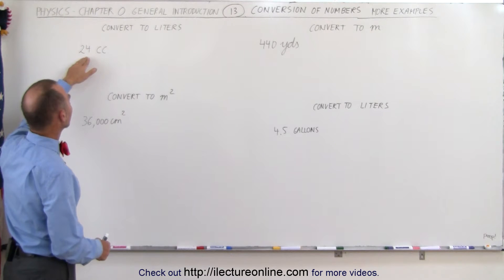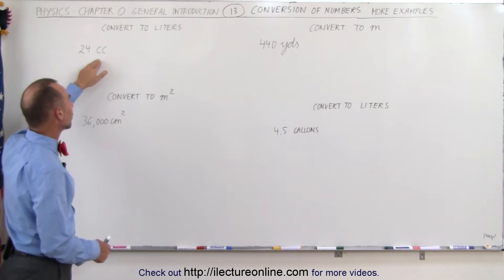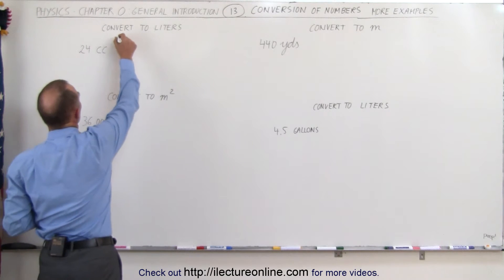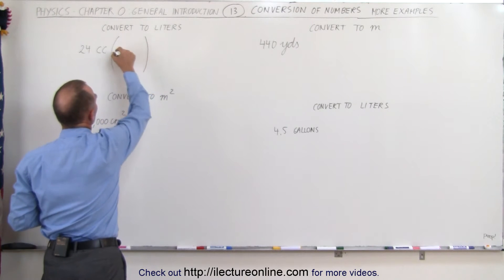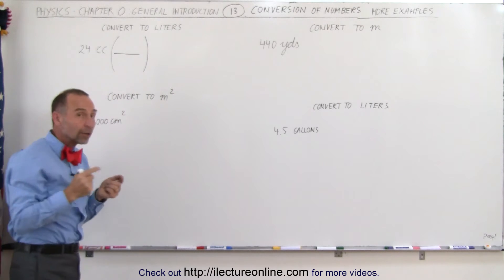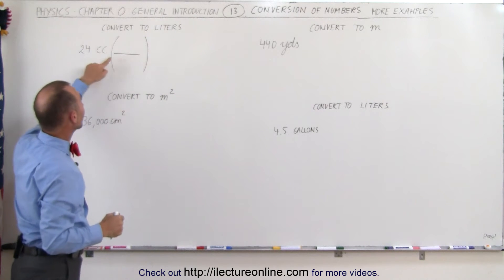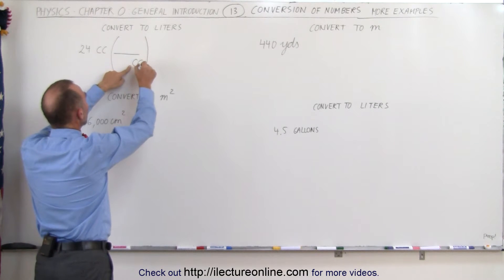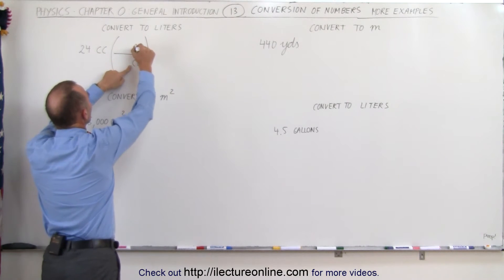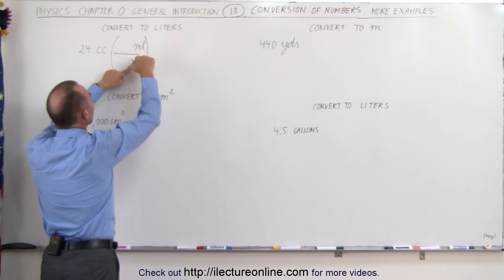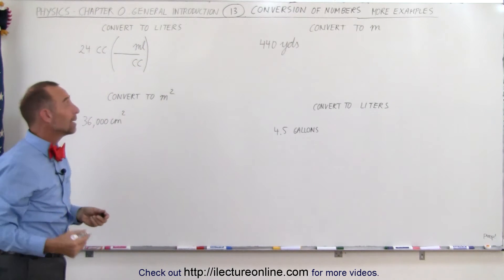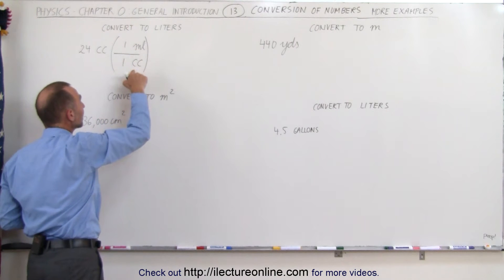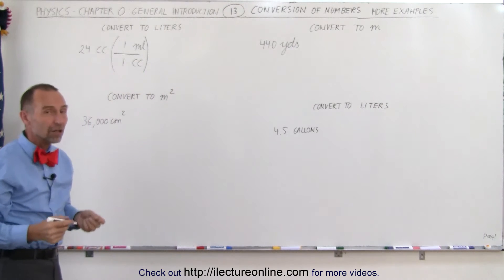Here we're going to first convert from cubic centimeters to milliliters. We multiply by the conversion factor. Since cubic centimeters is in the numerator, you want cubic centimeters at the bottom of the conversion factor. A cubic centimeter to a milliliter — it turns out the conversion is one to one. One cubic centimeter is exactly the same as one milliliter when it comes to volume.